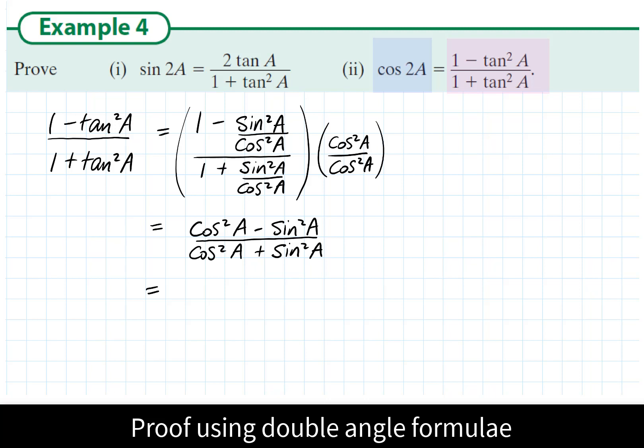I'm almost at the solution now. Cos squared A minus sin squared A is equal to cos 2A. This is in the Formula and Tables book, so this is useful.